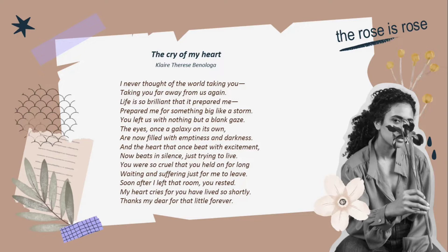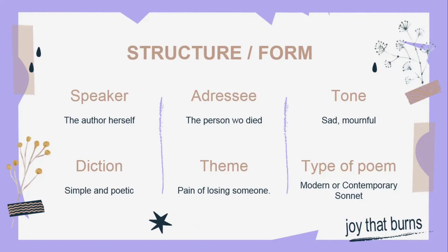Let us analyze first the speaker of the poem. The speaker is the author herself. As you can see, it uses the words I, me, and my. The addressee is the person who died. The tone of the poem is sad and mournful because it's about losing someone. The diction used is simple and poetic — it does not use a lot of complicated words. The theme is the pain of losing someone.